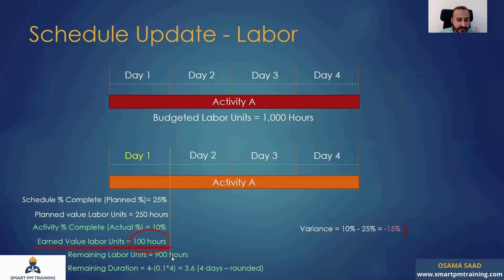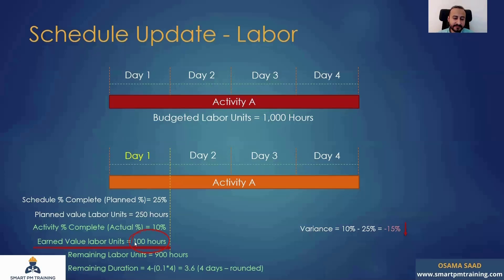Maybe you have 1,000 hours actually spent, but you're getting back 100 hours worth of progress. If you're spending 200 actual hours on site, it means that for each two hours actually spent with wages and laborers, you're getting back one hour worth of money and progress. That's another way to explain the earned value labor units concept.